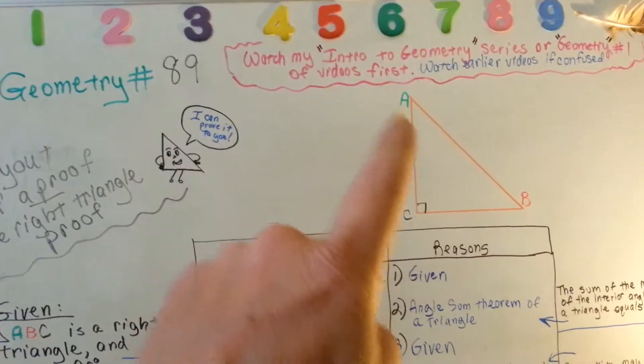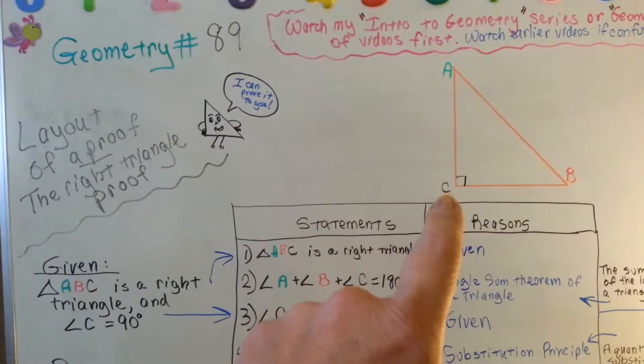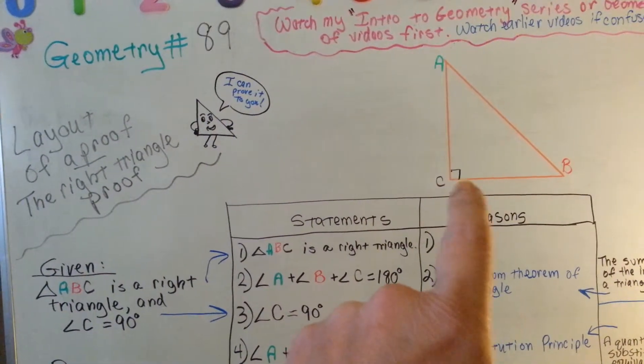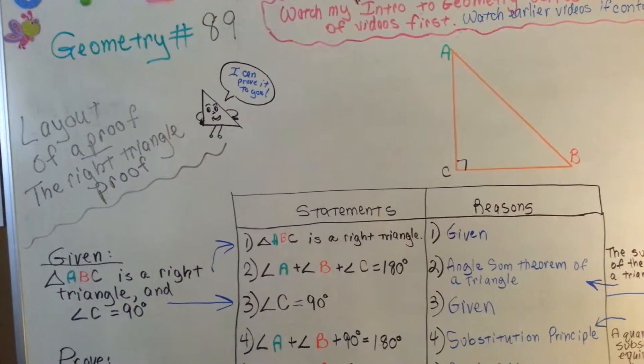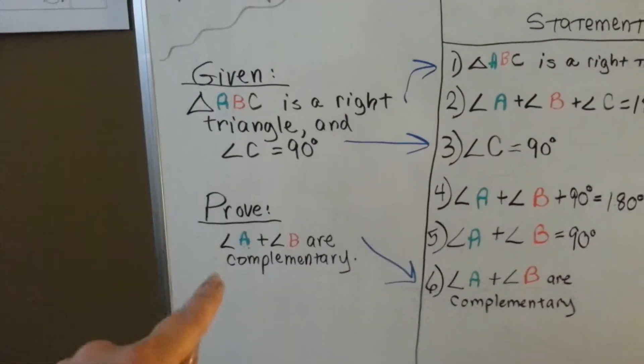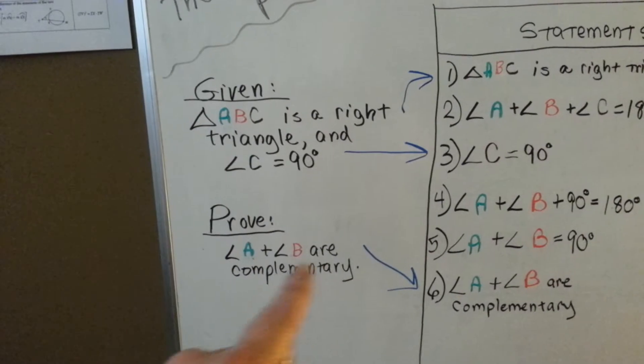The given says triangle ABC is a right triangle and its angle C is 90 degrees. So angle ABC is a right triangle and angle C is 90 degrees. And we see the little box there that tells us it's a right angle and that it's 90 degrees. Okay?